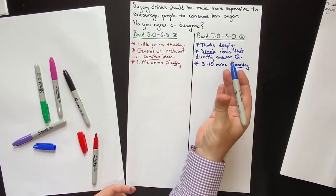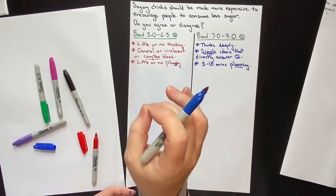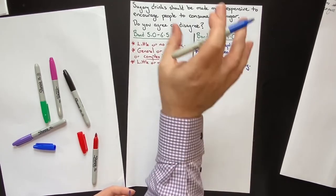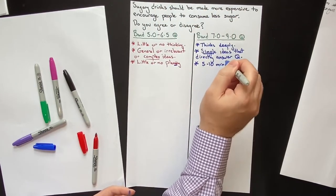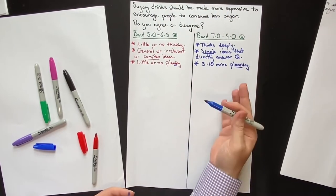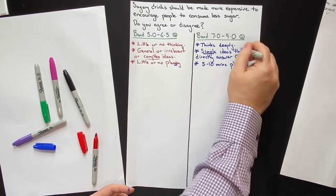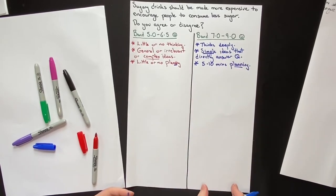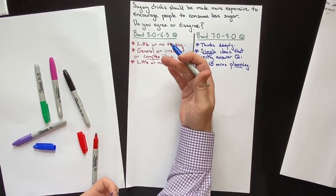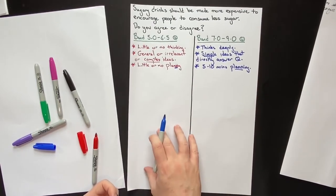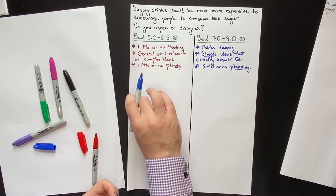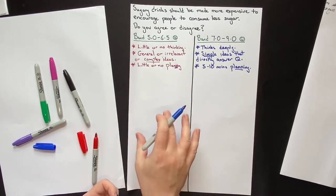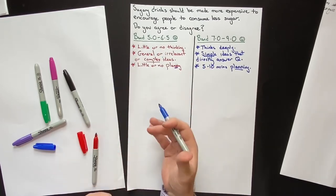Think of planning like Google Maps for your essay — if you have Google Maps, it's very easy to get to your destination without having to think about how to get there. The high-scoring student knows exactly what to write; they do all their thinking at this planning stage, then focus purely on writing. The low-scoring student does little thinking upfront and has to think while writing — writing a little, then thinking, then getting lost, frustrated, stressed. Their essay becomes a complete mess, they run out of time, and they fail.